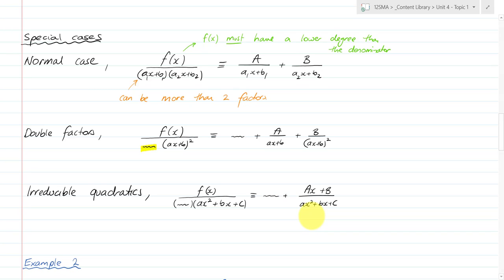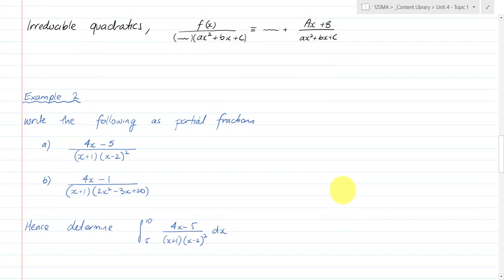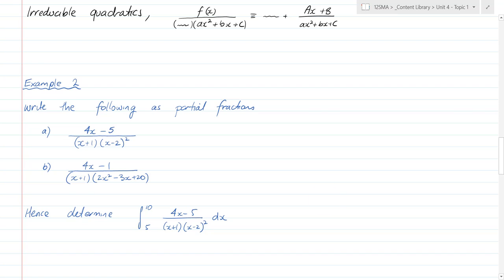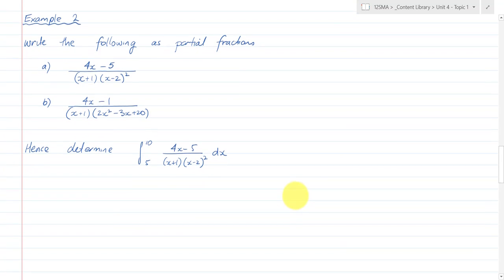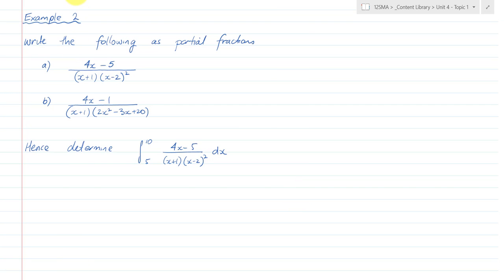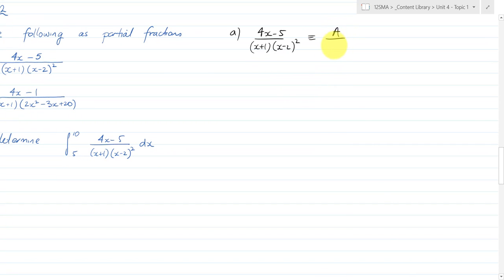There are some examples in your text and we'll cover each of those, but here are some further examples. Example 2: write the following as partial fractions. This one is the double quadratic case, so I'm going to say that (4x − 5) over (x + 1)(x − 2)² is identical to A over (x + 1) plus B over (x − 2) — the linear component of the factor — plus C over (x − 2)². That's how I set this one up.